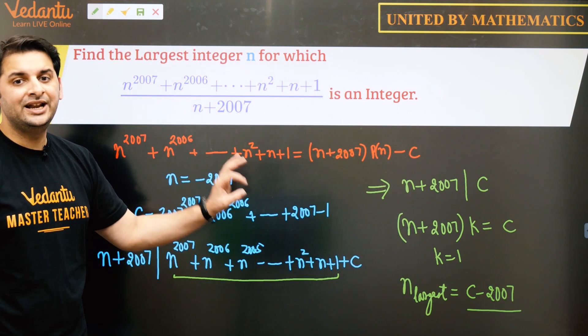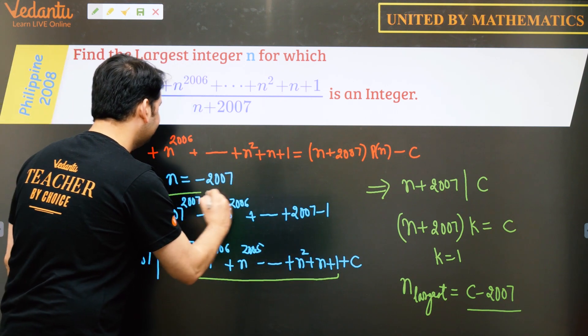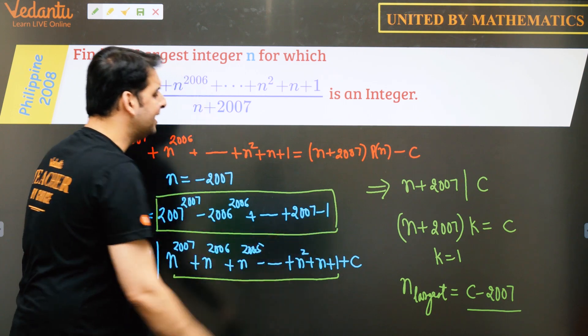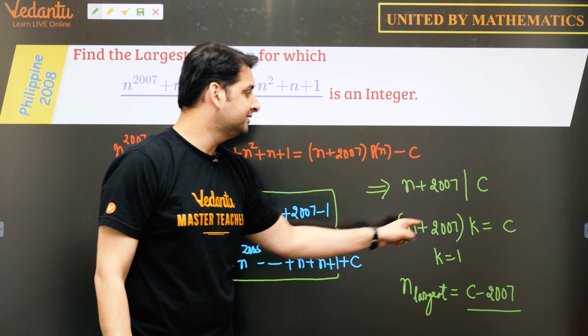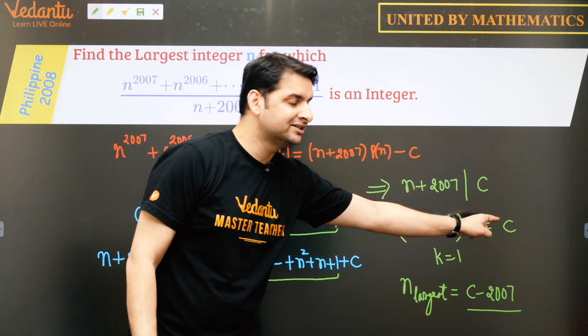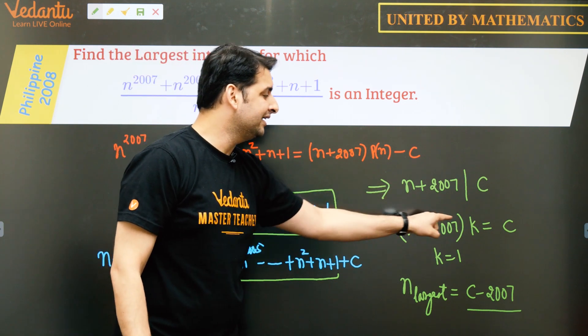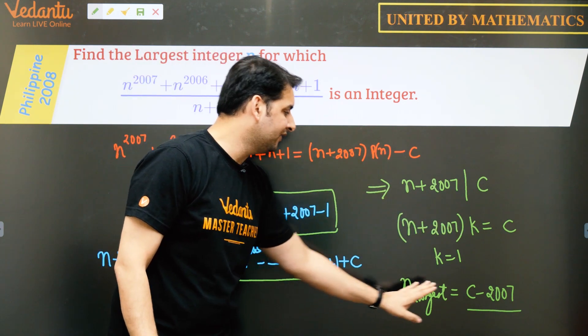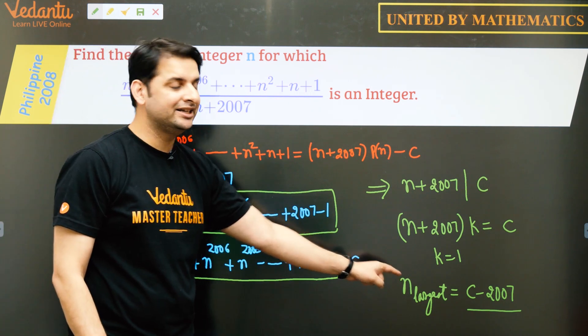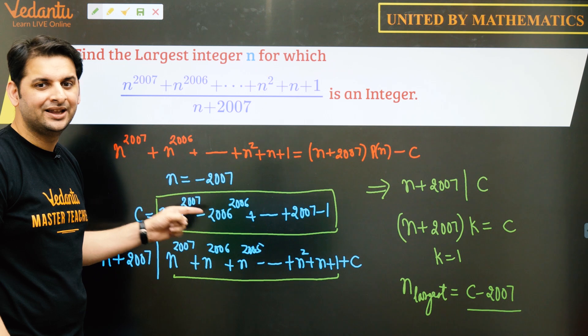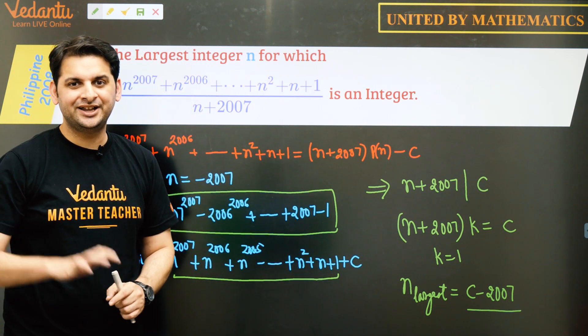So largest integer n would be c which is this number minus 2007 because if we are to make n large, we have to minimize k because c is the constant which is this. So n largest would be when k is equal to 1 and largest value of n would be c minus 2007 and we can easily see that n is an integer because c is an integer. And this is the answer. Hope you enjoyed the solution. Take care. God bless.